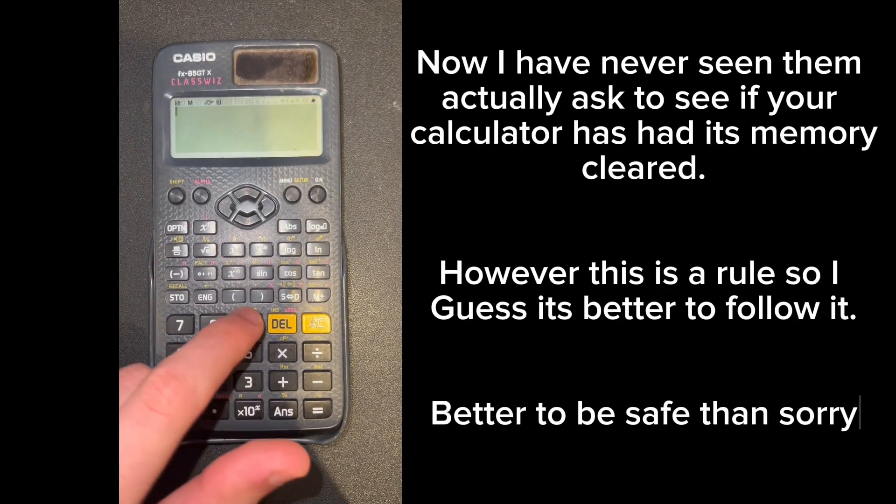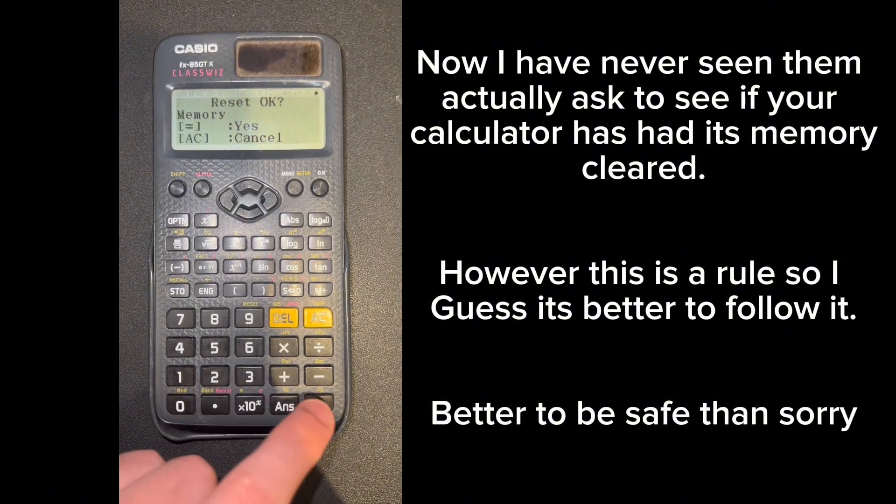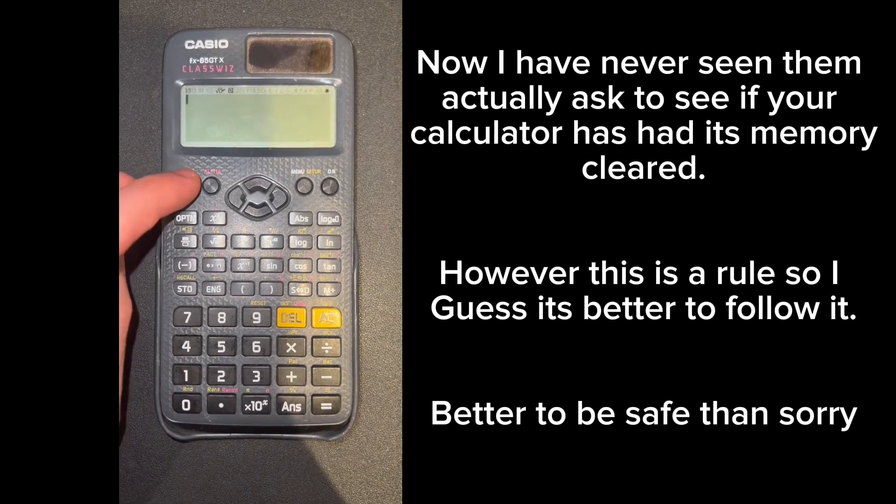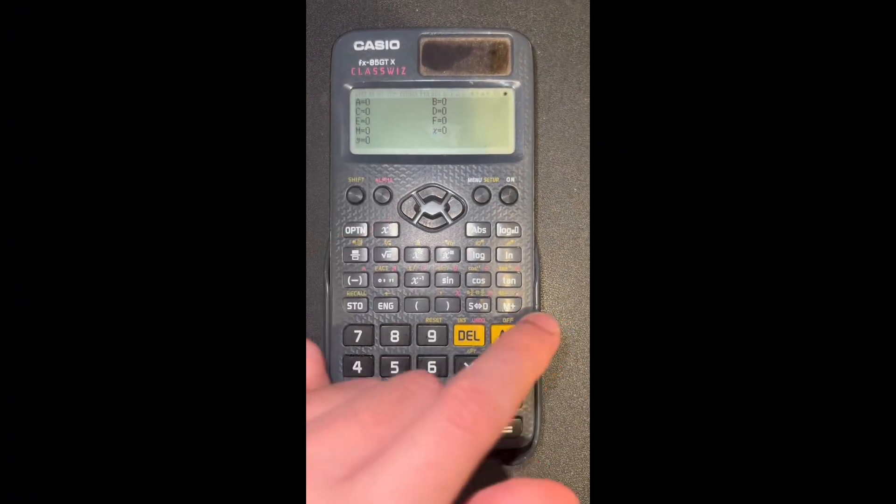First, we press shift. Then we press the number nine, as it says reset, and then press two for memory, then equals. And finally, you press the AC key. And there you go. It's all cleared. Now, if you go and see your stored values, you'll see they've all been reset to the default zero.